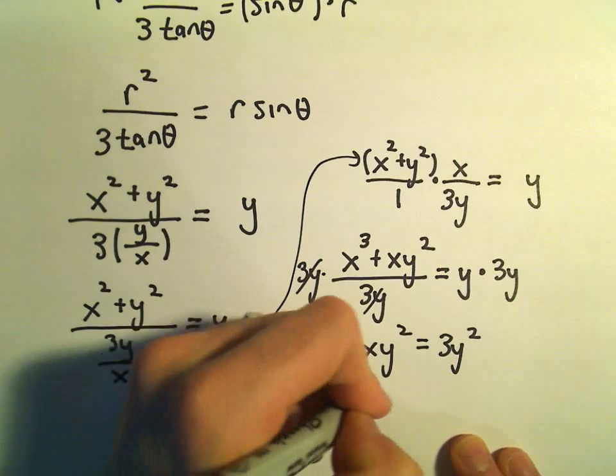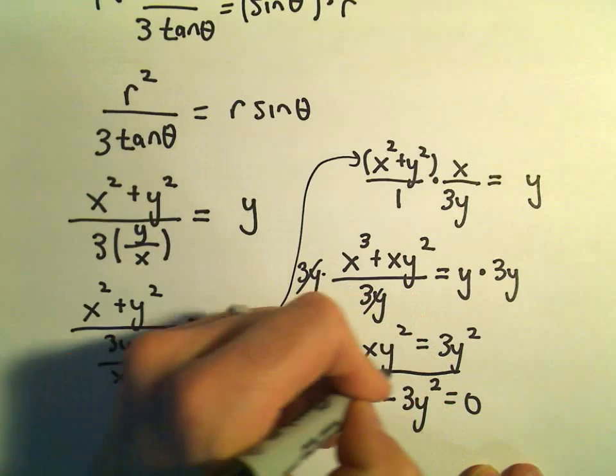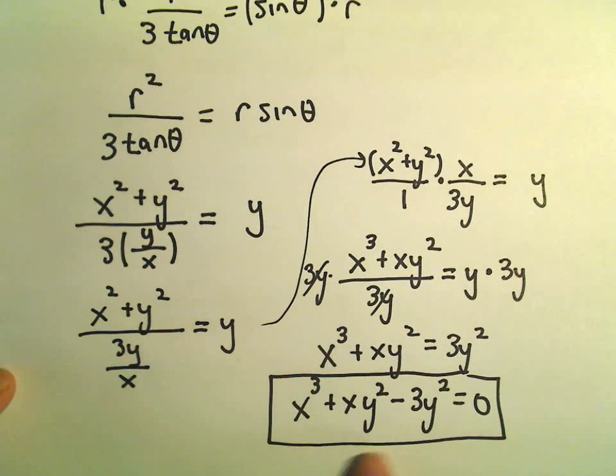We could subtract the 3y² from both sides. And I would say now, this is a good place. We've turned our polar equation into a rectangular equation.